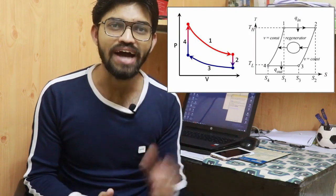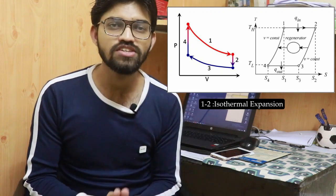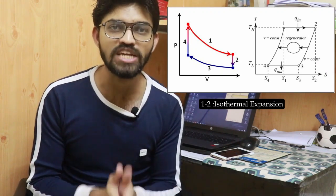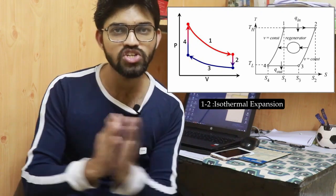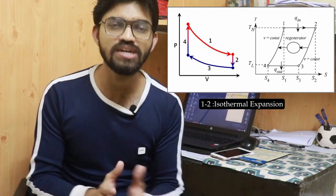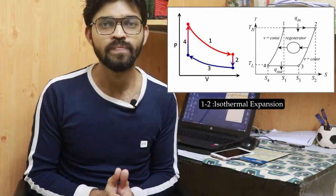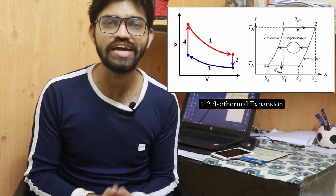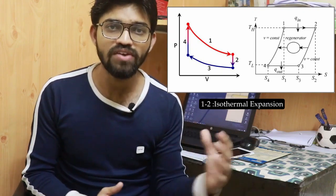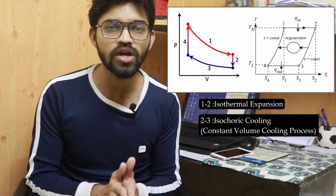Process one to two is the isothermal expansion — the same as in the Carnot cycle. During isothermal expansion, the piston moves outward: volume increases and pressure decreases. Because this is isothermal, temperature remains constant. This gives a curve on the PV diagram and a straight line on the TS diagram.